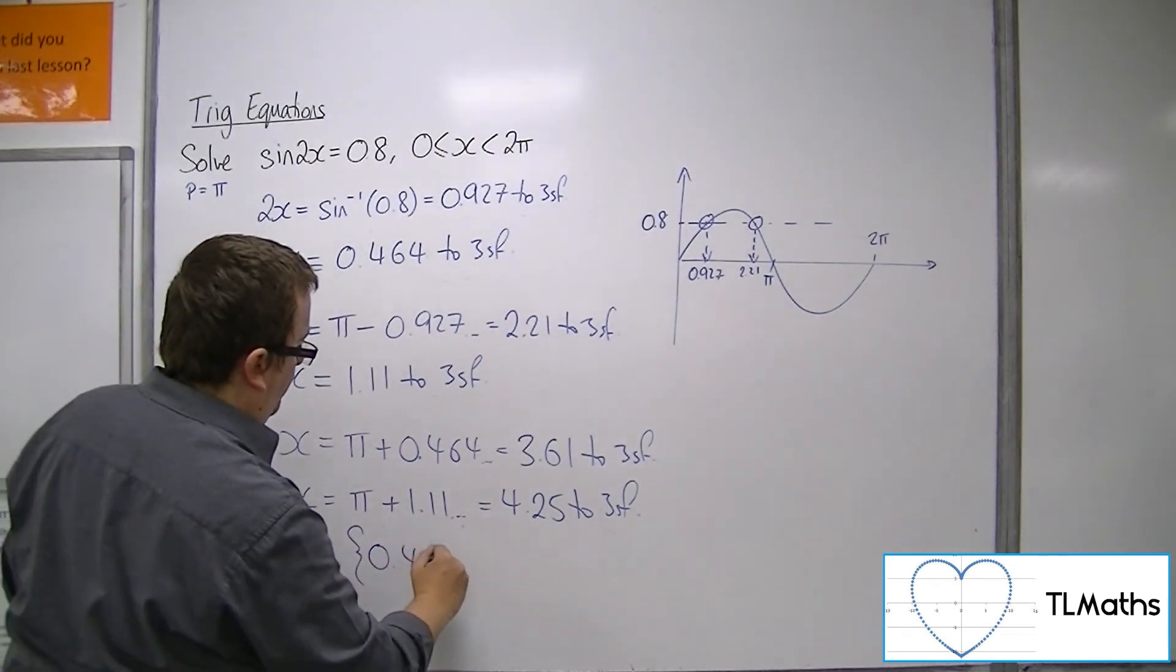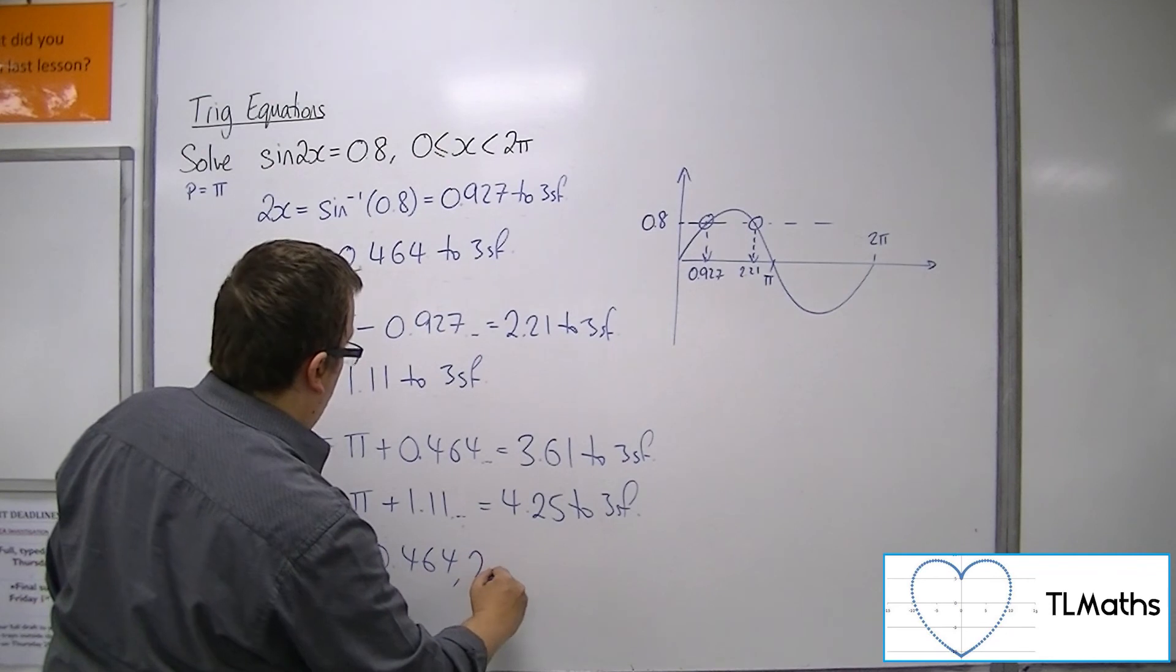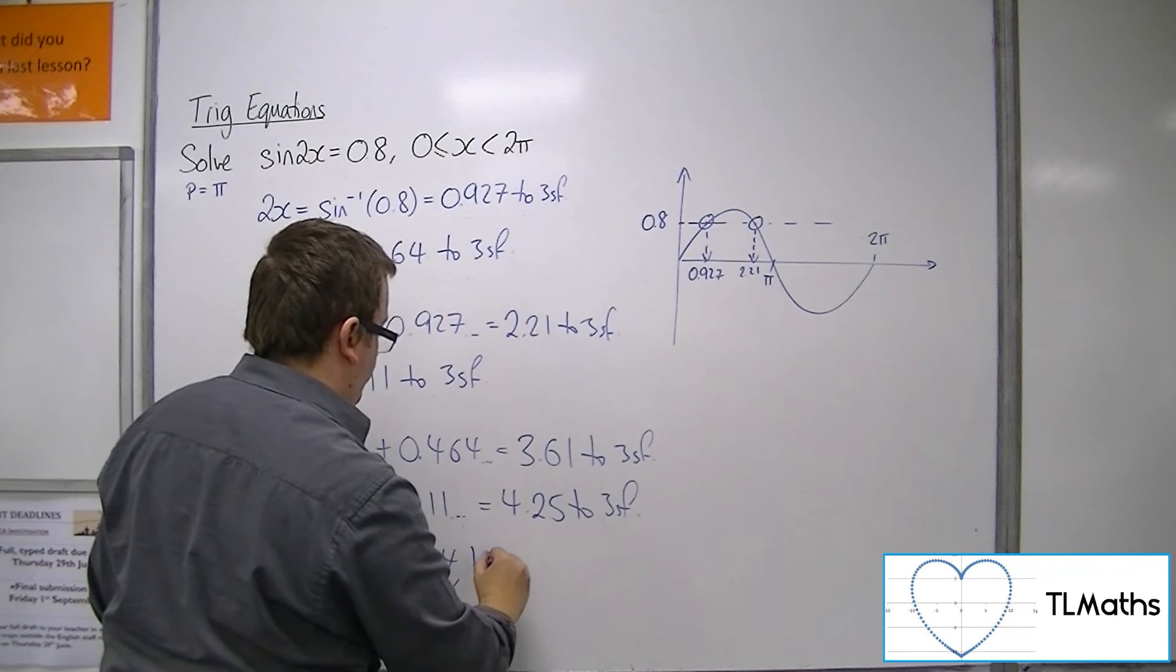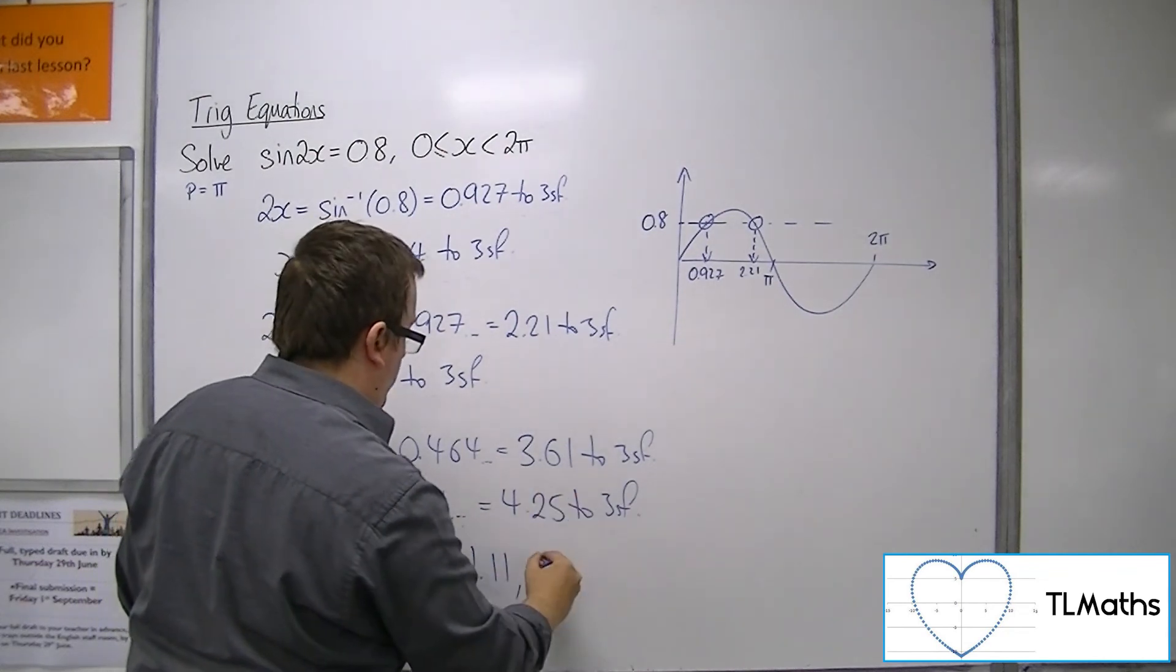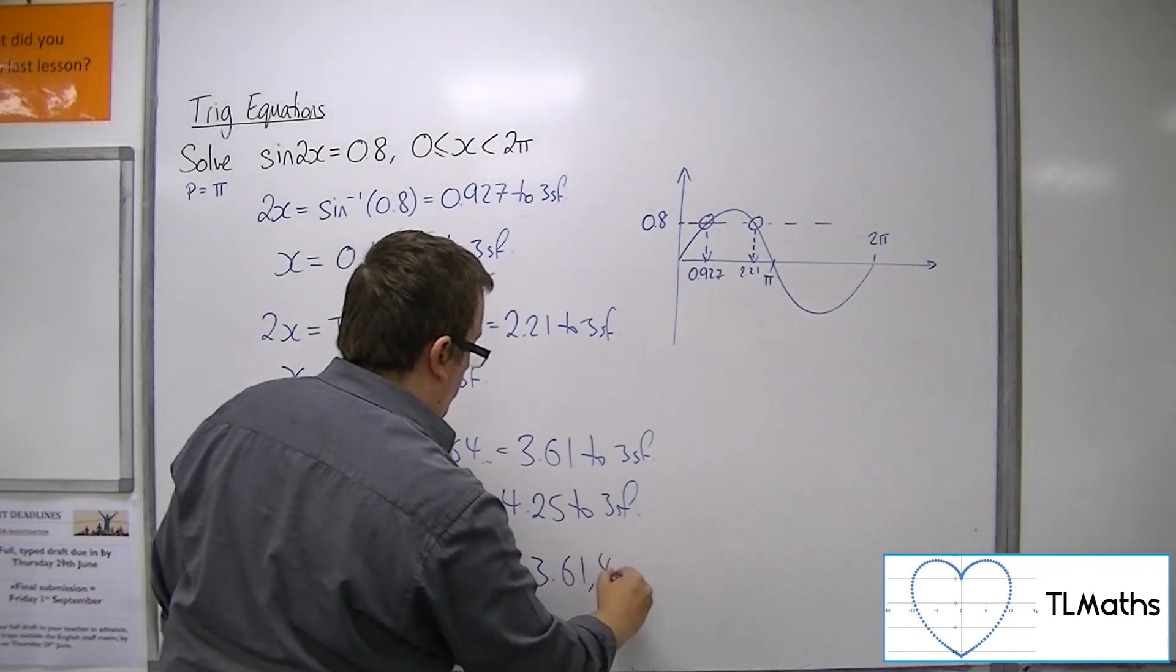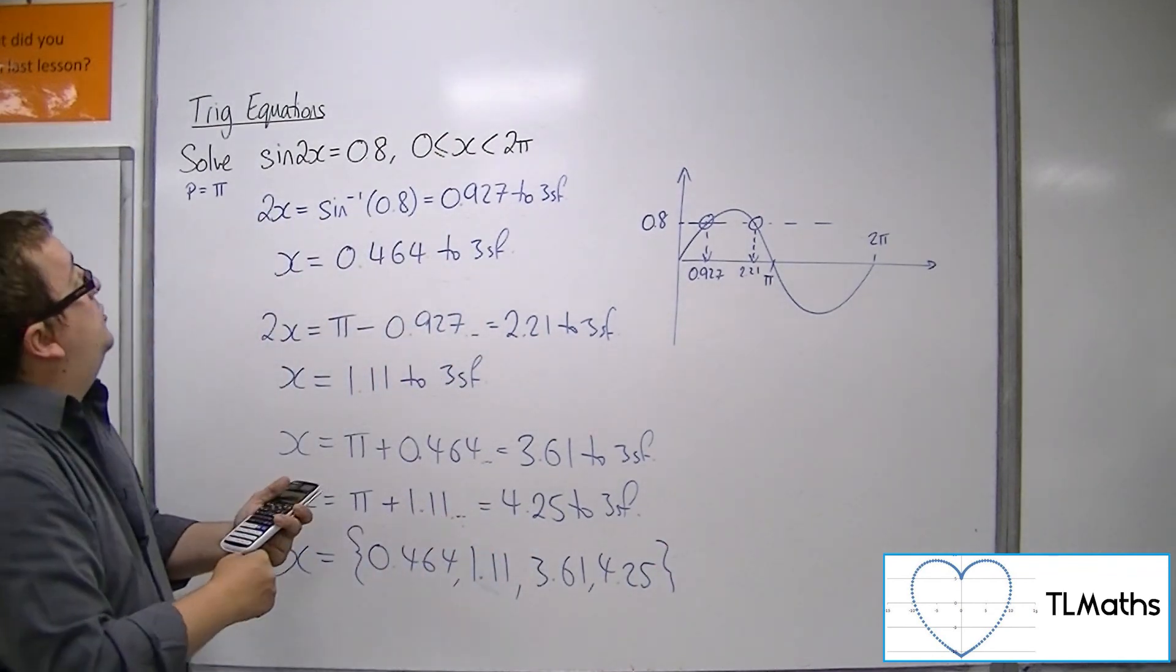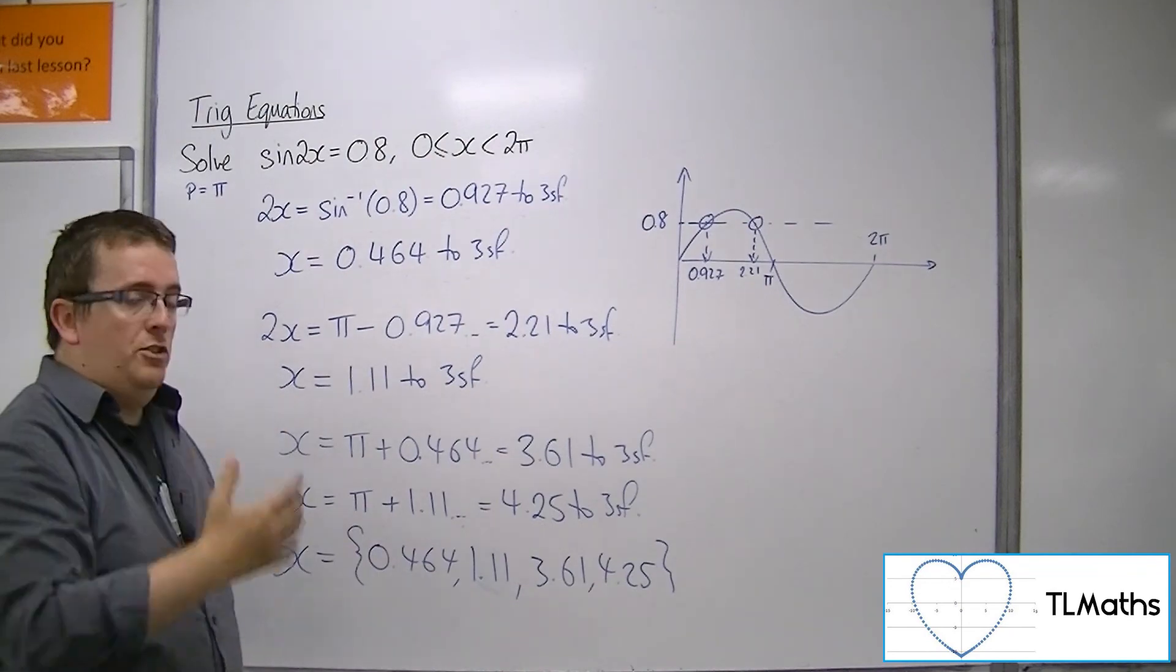I've got the 0.464, I've got the, oh sorry, not 2.21, the 1.11, I've got the 3.61, and the 4.25. And they are the four solutions to sine 2x equals 0.8 between 0 and 2π.